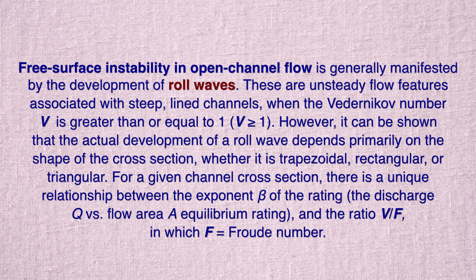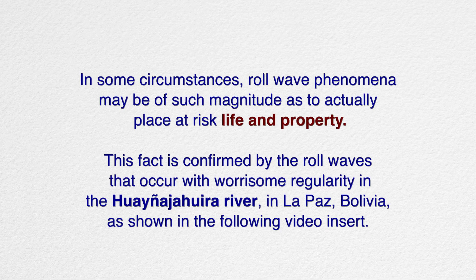For a given channel cross-section, there is a unique relationship between the exponent beta of the rating and the ratio V over F, in which F is the Froude number. In some circumstances, roll wave phenomena may be of such magnitude as to actually place at risk life and property. This fact is confirmed by the roll waves that occur with worrisome regularity in the Guayana-Jaguira River in La Paz, Bolivia, as shown in the following video insert.